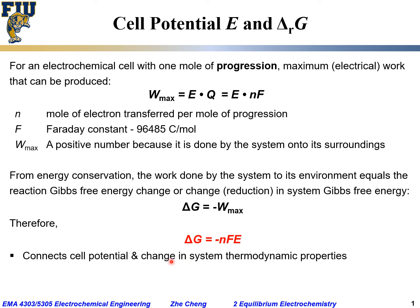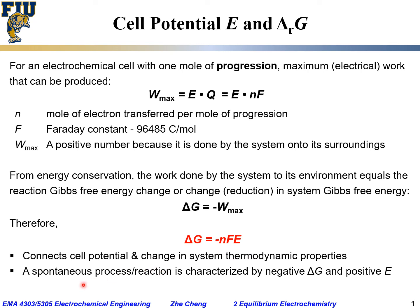We are now able to connect cell potential E and the change in system thermodynamic property delta G. A spontaneous process requires delta G to be negative, and a negative delta G requires a positive E. This is consistent with what we said before: for an electrochemical reaction, if the cell potential is positive, the process is spontaneous and energetically favorable.